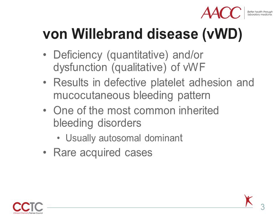Von Willebrand disease is due to deficiency, a quantitative problem, or dysfunction, a qualitative problem of von Willebrand factor, or a combination of deficiency and dysfunction. The abnormalities result in defective platelet adhesion at sites of injury and a mucocutaneous bleeding pattern, which could include manifestations such as epistaxis or nosebleeds, menorrhagia, heavy menstrual periods, or easy bruising. Factor VIII levels are also low in many cases.